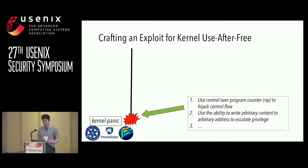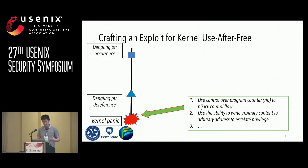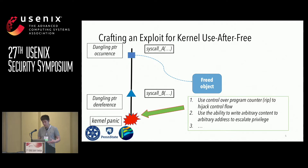Assume we have a proof-of-concept program, and running the POC will trigger a special execution trace and end up panicking the kernel. To write an exploit from the POC, we need to inspect the panic machine state and inspect code relevant to the panic site. If we find the panic can potentially be transformed into a useful exploitable primitive, such as control flow hijack or arbitrary memory write, we can continue exploit development. To do that, we need to identify the site of dangling pointer occurrence and dereference, and pinpoint the corresponding system calls as well as the thread object.